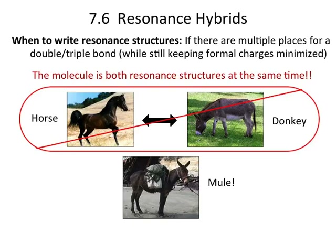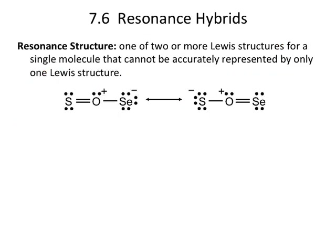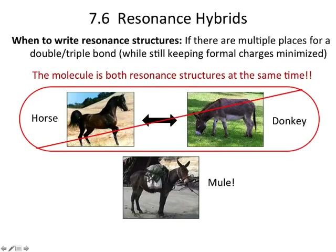So when do you write resonance structures? You write the resonance structures if there are multiple places for a double or triple bond — that's, I think, the biggest tip-off. You look at this and think, I could put the double bond on the left or the right, where do I put it? The answer is in both places. Or other times, if you have multiple ways to distribute the electrons around the molecule, if you can put electrons equivalently around the molecule and both structures are legit, then you have to do both.